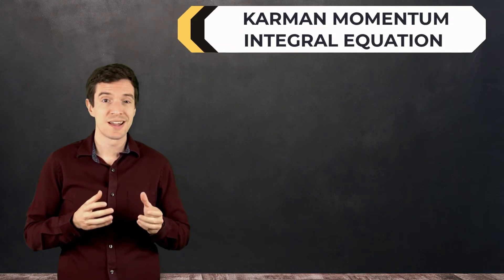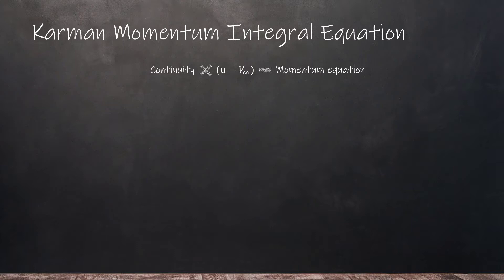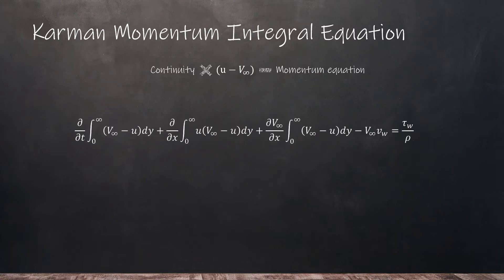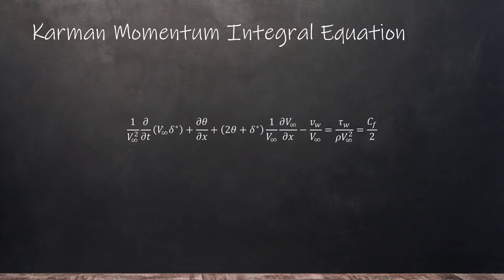Starting from these equations, Kármán came up with a form of the momentum integral equation. This expression is obtained by multiplying the continuity equation by the difference of the x-component of velocity and the free stream velocity, then subtracting it from the momentum equation. In the integral form obtained we can recognize the expressions of the momentum thickness and the displacement thickness. The term v_w is the normal velocity to the wall, accounting for injection or suction of air through the wall.